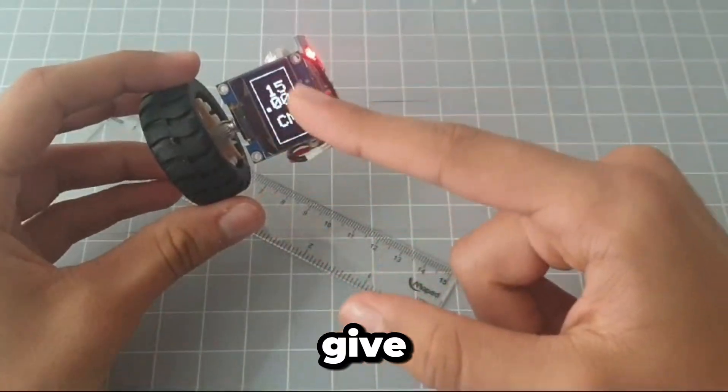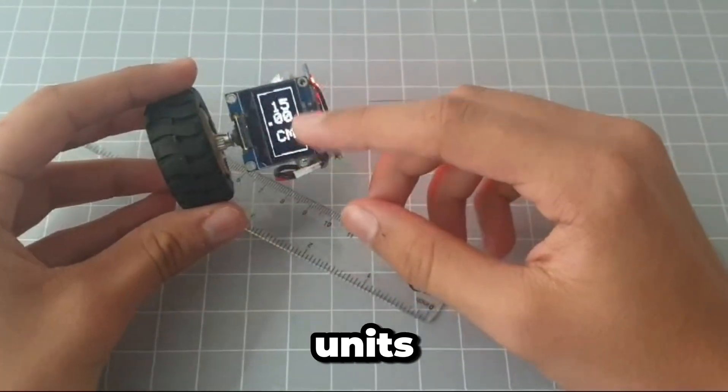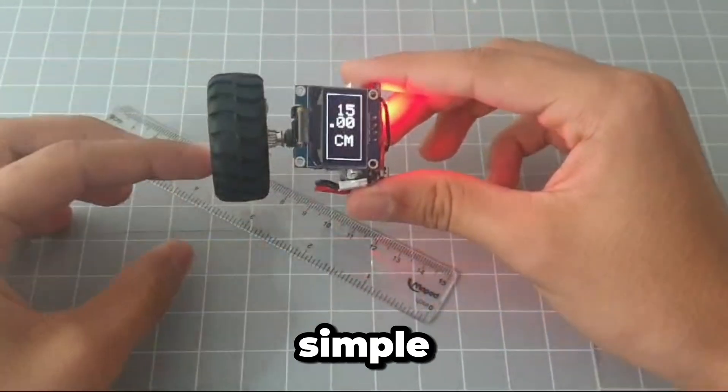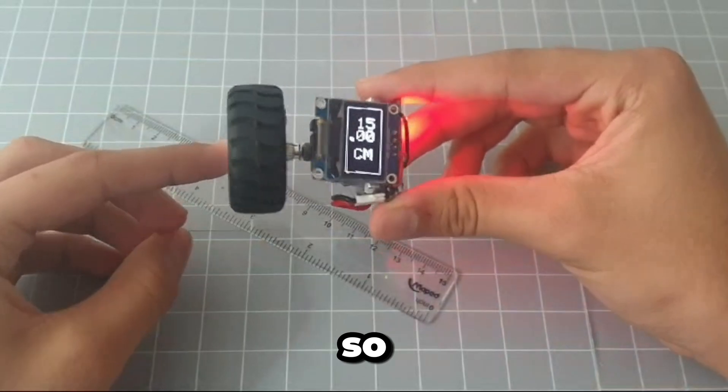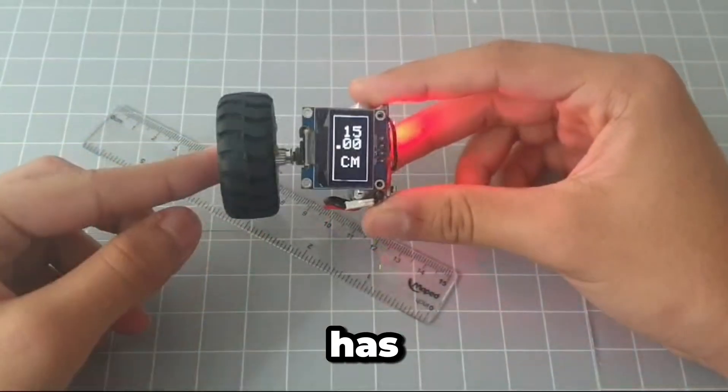And it will give you how many centimeters it has traveled. Now to change the units, it's very simple, you just need to click this, so the rotary potentiometer actually has a button.